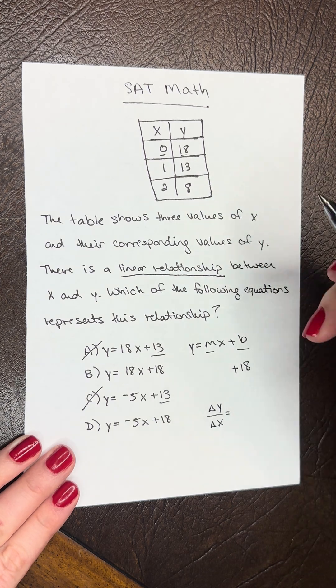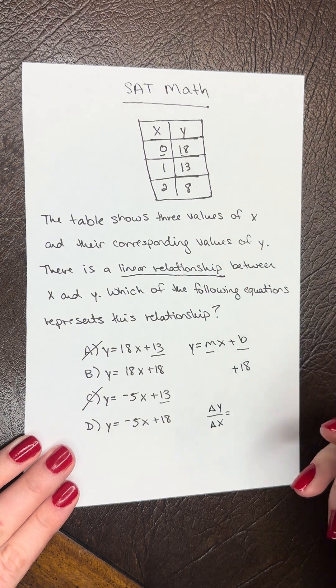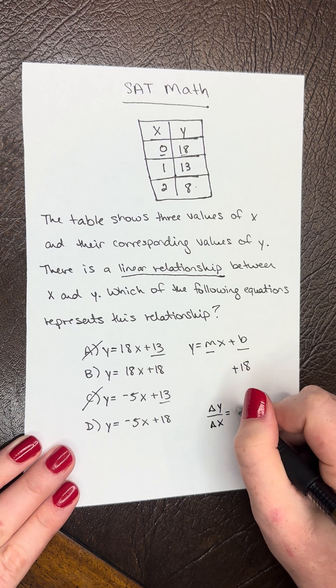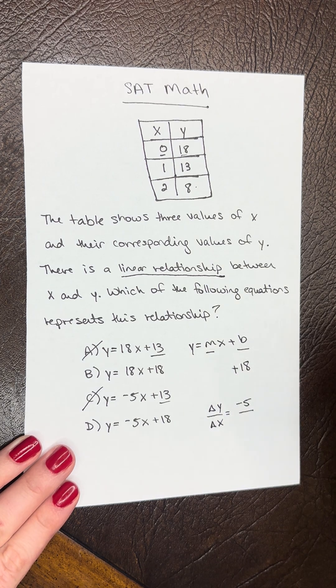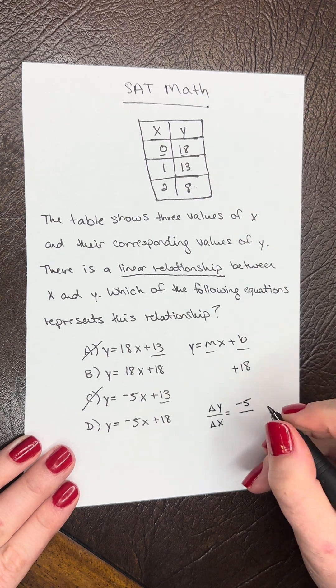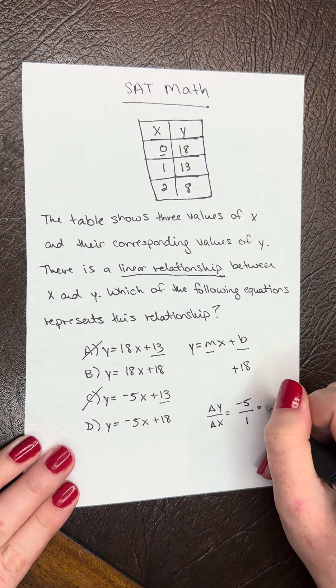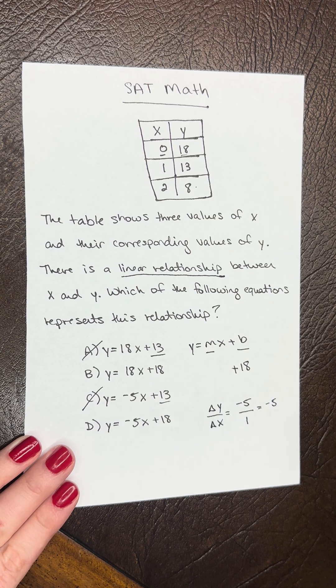So let's look at our change in y. So we're going to do 8 minus 13. And that's going to give us negative 5 over our change in x. So we have 2 minus 1. So that's just 1. So our slope is going to be negative 5.